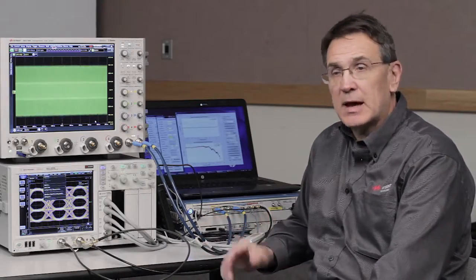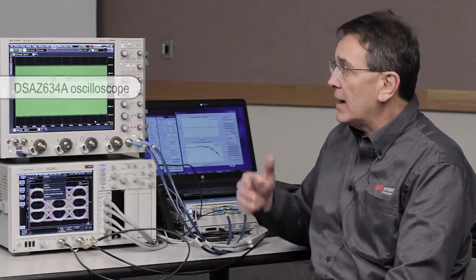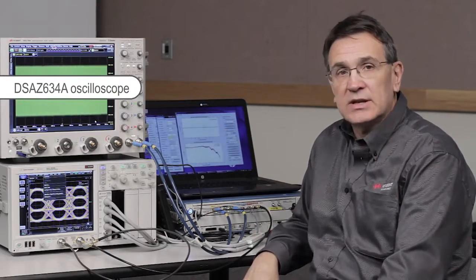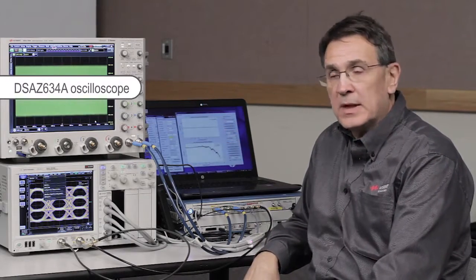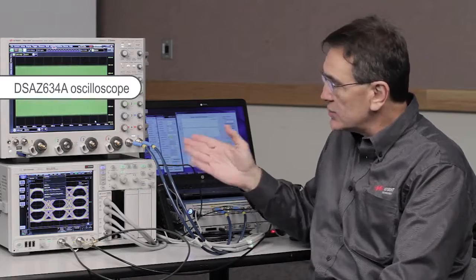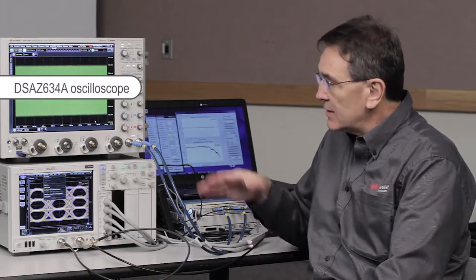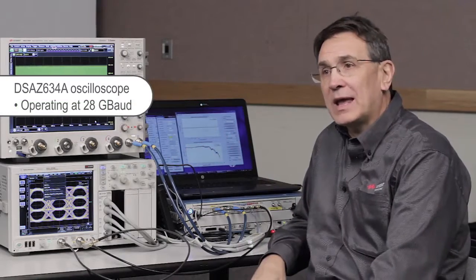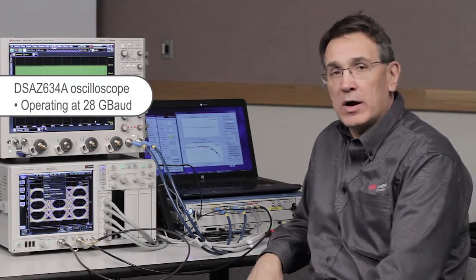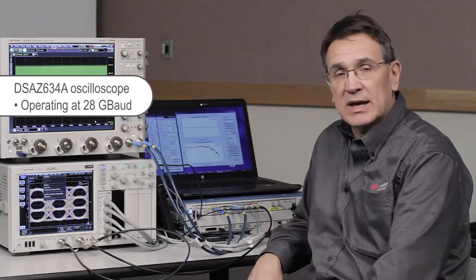So let me talk to you a little bit about our setup here. We have a Keysight Z-Series 63 GHz oscilloscope and we're using our real-age channels that have full bandwidth out to 63 GHz to receive a PAM-4 signal that's operating at 28 Gbaud or 28 giga symbols per second.